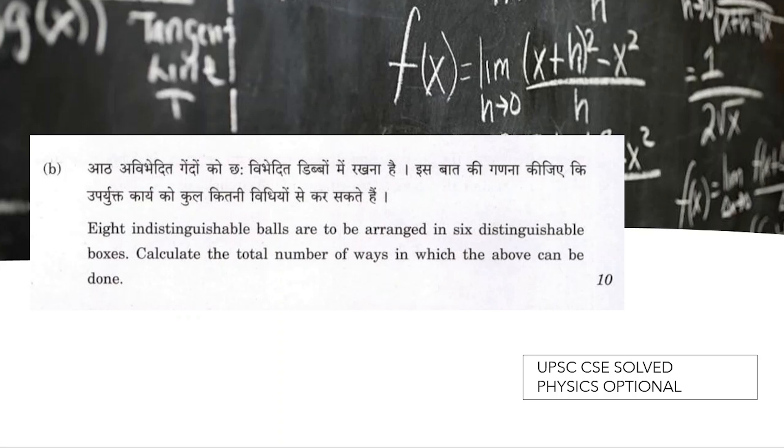Hello everyone, in this video we will be talking about one of the previous question papers of physics optional UPSC CSC exam. Here's the question: we are given eight indistinguishable balls that are to be arranged in six distinguishable boxes.